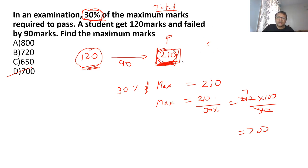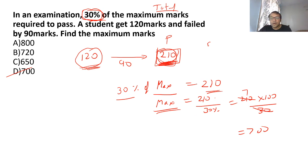Passing marks is 210. 210 is 30% of the maximum marks, so maximum marks = 210 / 30% = 700 as the answer.